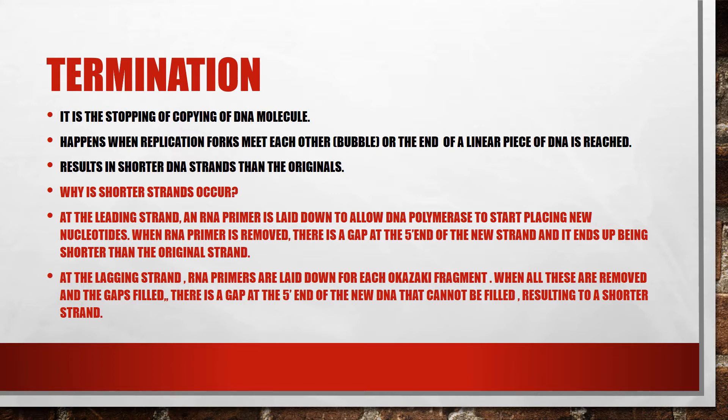Why do shorter strands occur? At the leading strand, an RNA primer is laid down to allow polymerase to start placing new nucleotides. When the RNA primer is removed, there is a gap at the 5' end of the new strand, and it ends up being shorter than the original DNA strand.